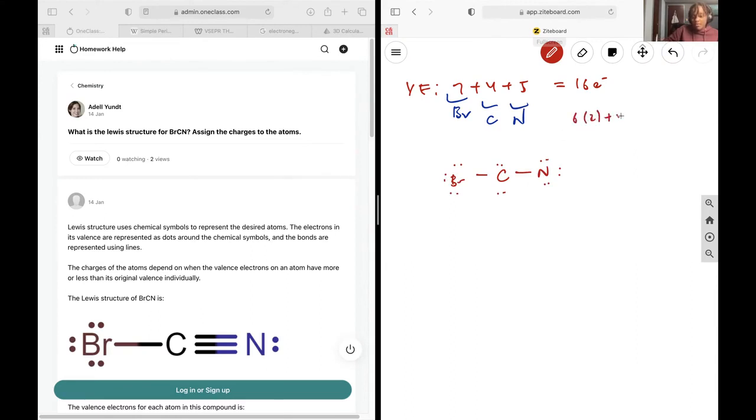This would imply 6 times 2 plus 4 plus 4, which is 12 plus 8, which is 20 electrons. So obviously, I have too many electrons.